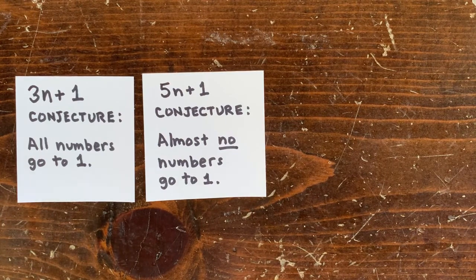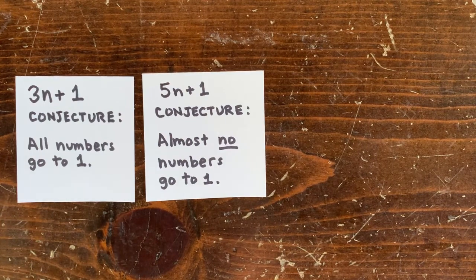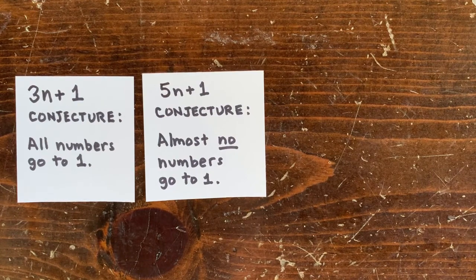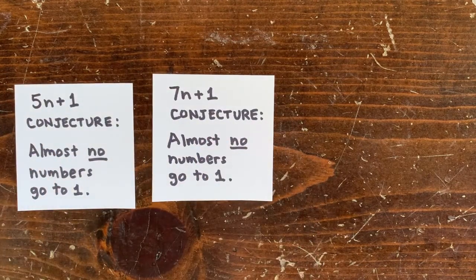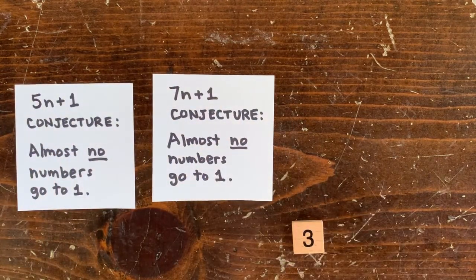Obviously 2, 4, 8, 16 go to 1, but it seems like almost every other number runs off to infinity, except for a few small ones stuck in cycles. And the same thing for the 7n plus 1 problem, where we also conjecture that almost no numbers go to 1.